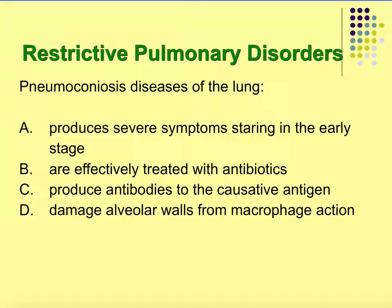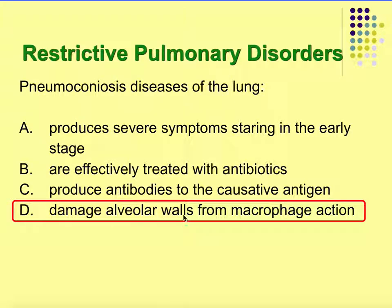Review question: Pneumoconiosis, disease of the lungs — which of the following is most likely? Does it produce severe symptoms in the early stage? Is it effectively treated with antibiotics? Does it produce antibodies to the causative agent or antigen? Or does it damage alveolar walls from macrophage action? The best answer is that it damages the alveolar wall because macrophages are mobilized to the area.